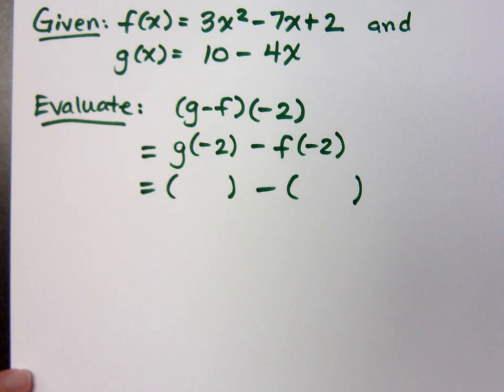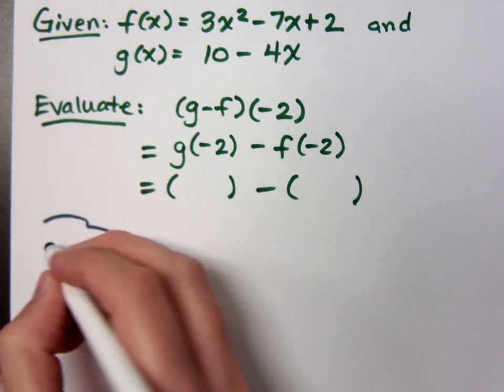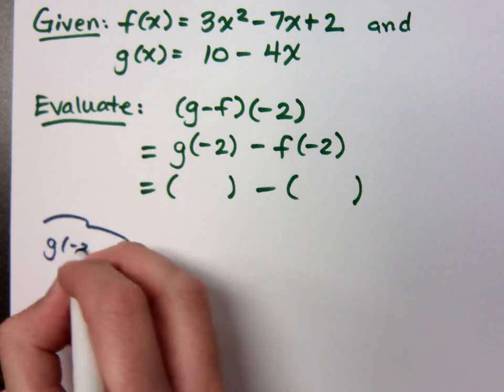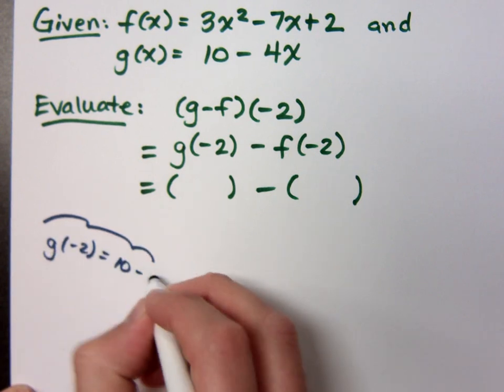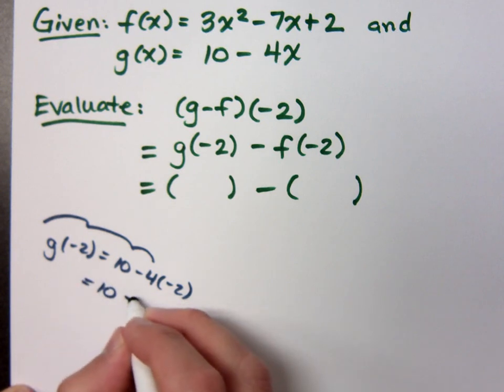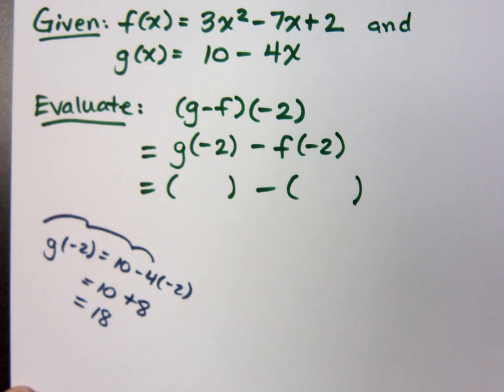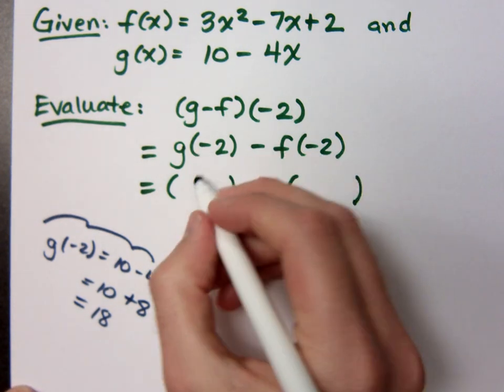For example, g of negative 2, a little thought bubble over here. So g of negative 2 means 10 minus 4 times negative 2, which, of course, is 10 plus 8, which equals 18. Do you all get that? So I'm just going to put the 18 in here.